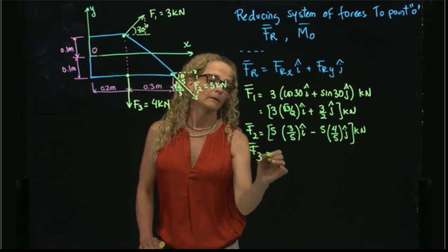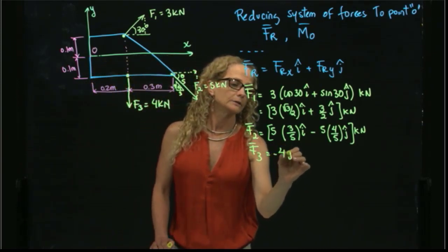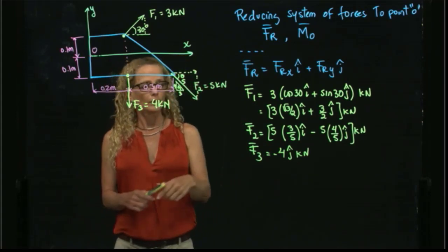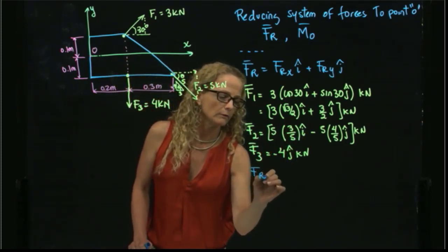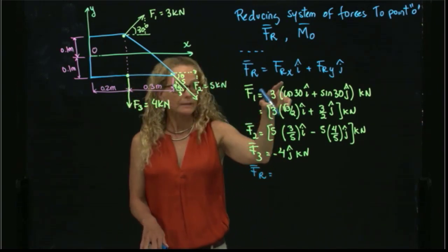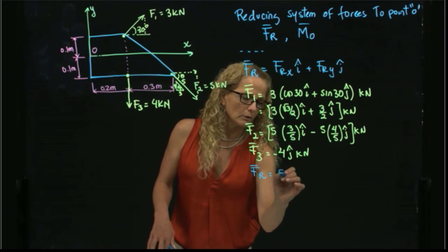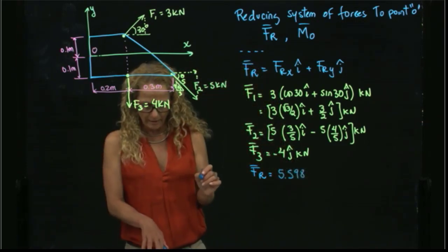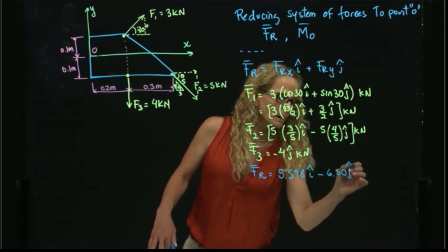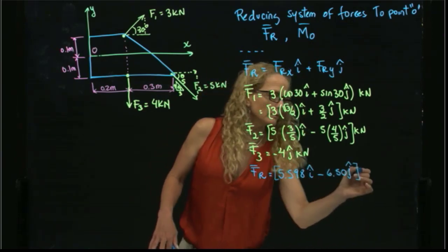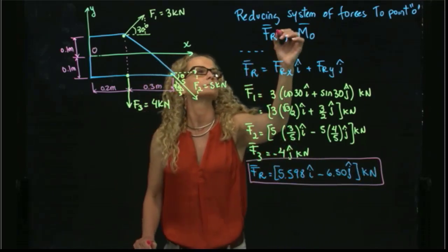F3 is straightforward — it has only a component in the Y direction: negative 4 J kilonewtons. Adding all the X values and all the Y values, the resultant force equals 5.5 I plus 6.50 J — wait, let me note that — giving us the resultant force as a vector in kilonewtons.